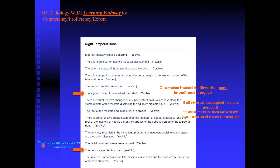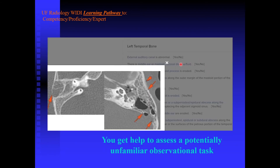If you're not sure what the petrous apex is, when you hover over the little blue icon, we pop up a modal window showing an example of an eroded outer cortex of the mastoid. So you're looking at this observation, hover over the blue, and it shows you what you're looking for — not in that specific case, but just in general. If the student is unfamiliar with this, we didn't think it was fair to ask these questions without at least some leading education specific to the question. That happens for all observations in all cases.